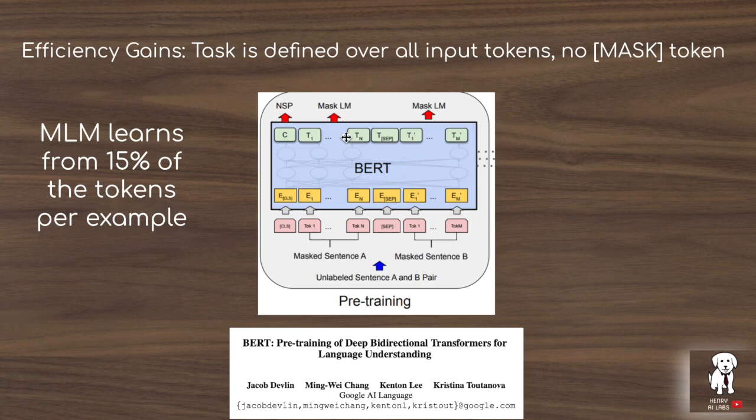The second reason replace token detection is more efficient than masked language modeling is that it doesn't introduce the mask token. In BERT, the mask token is introduced to define the predict-the-masked-token objective, but you don't see that mask token at test time, creating an artificial train-test discrepancy in this self-supervised learning task.